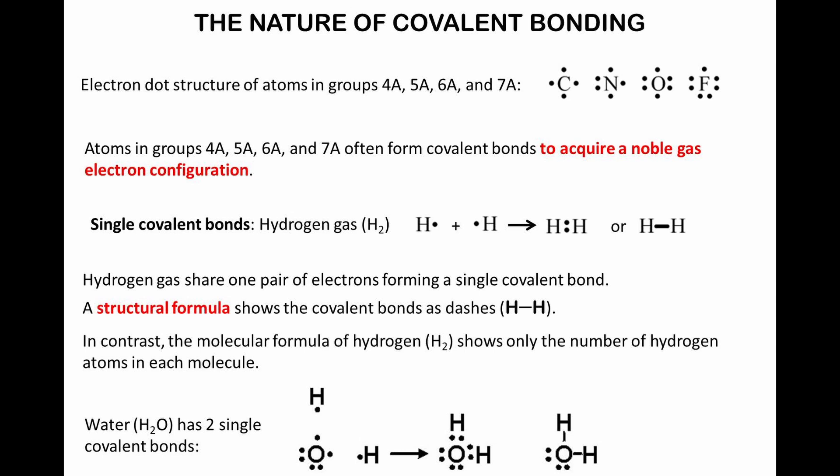That's why noble gases are very stable. With the exception of helium, the general rule for noble gases is having eight valence electrons, which leads to the octet rule. The octet rule states that in a chemical reaction, atoms gain or lose electrons to acquire the electron configuration of a noble gas.